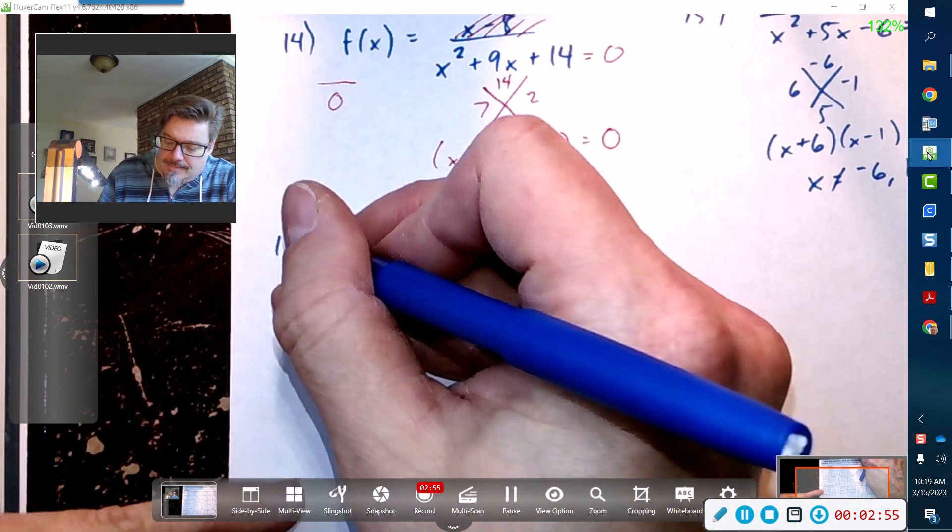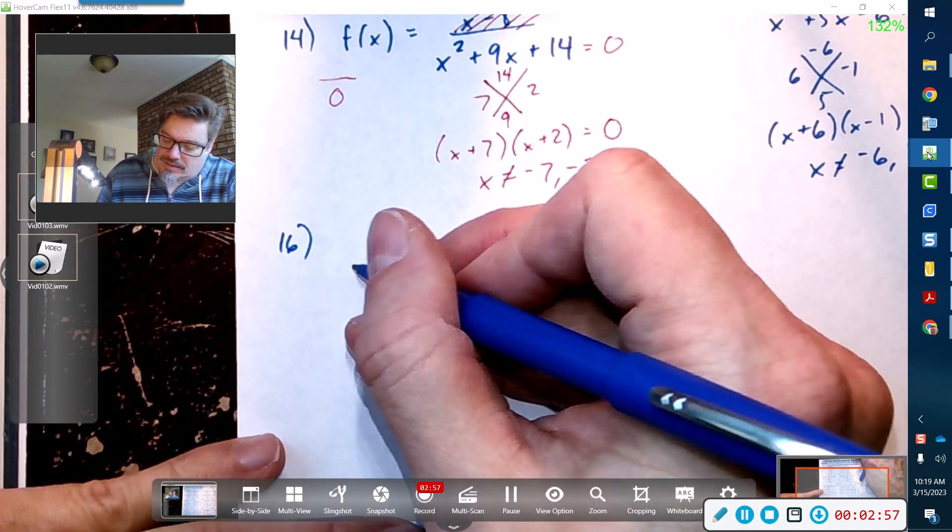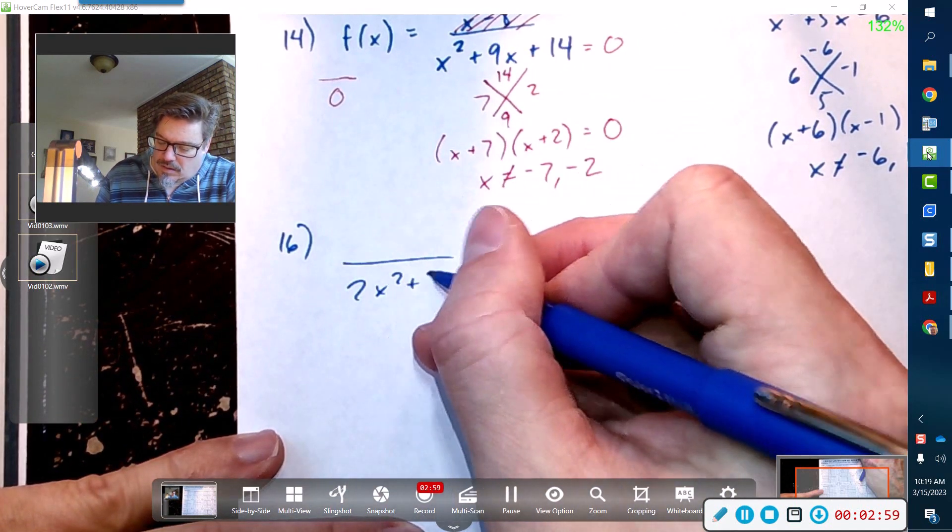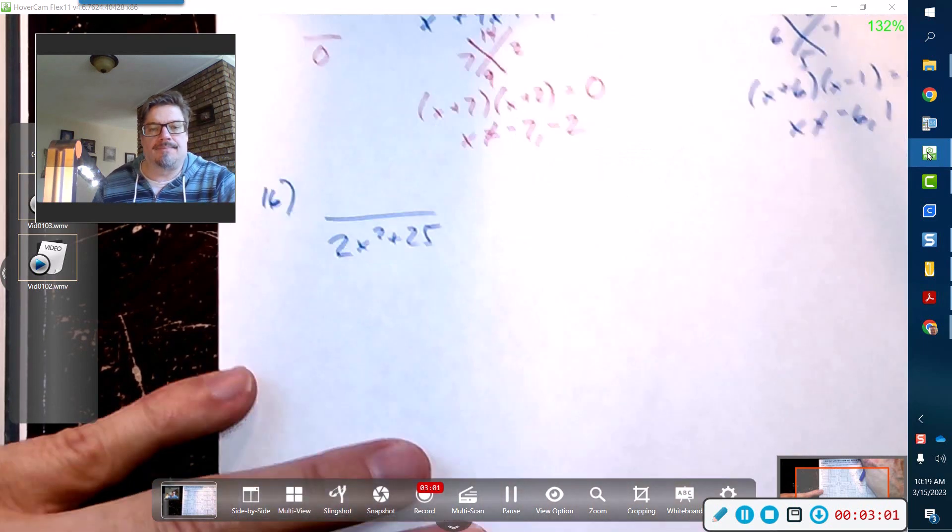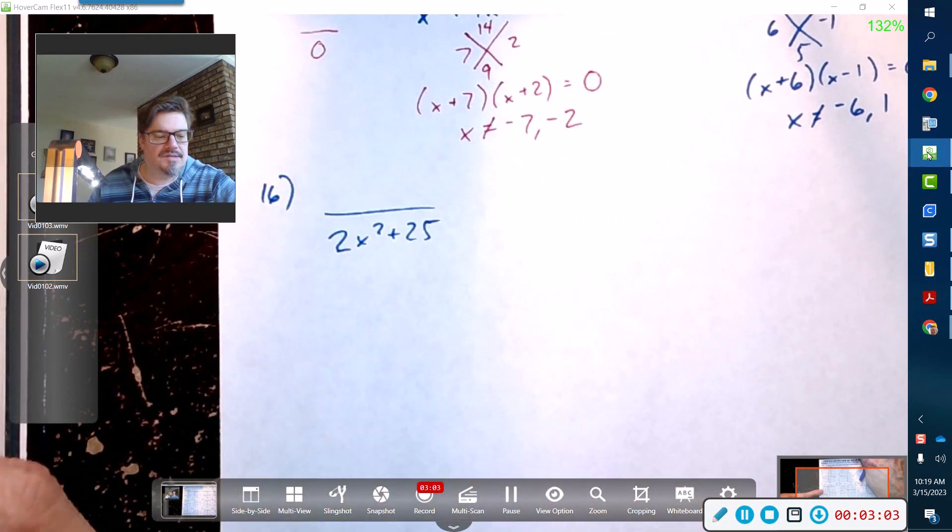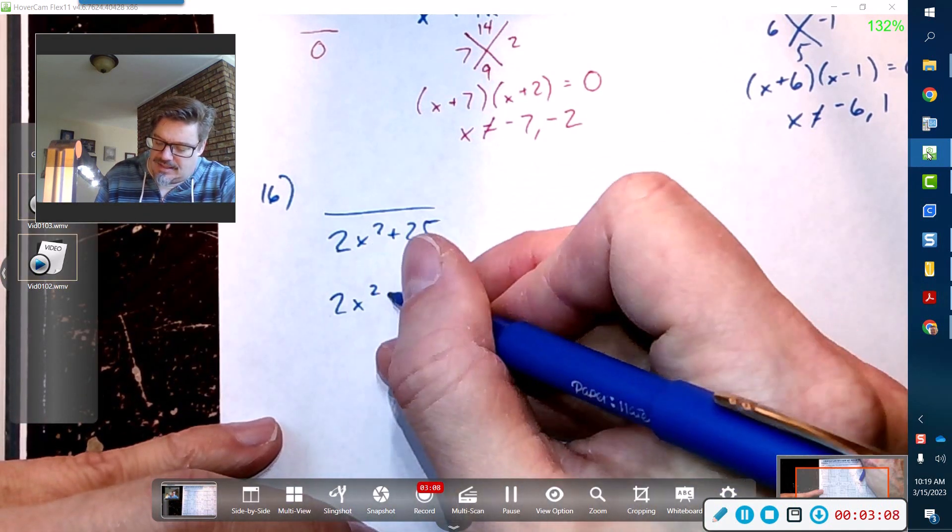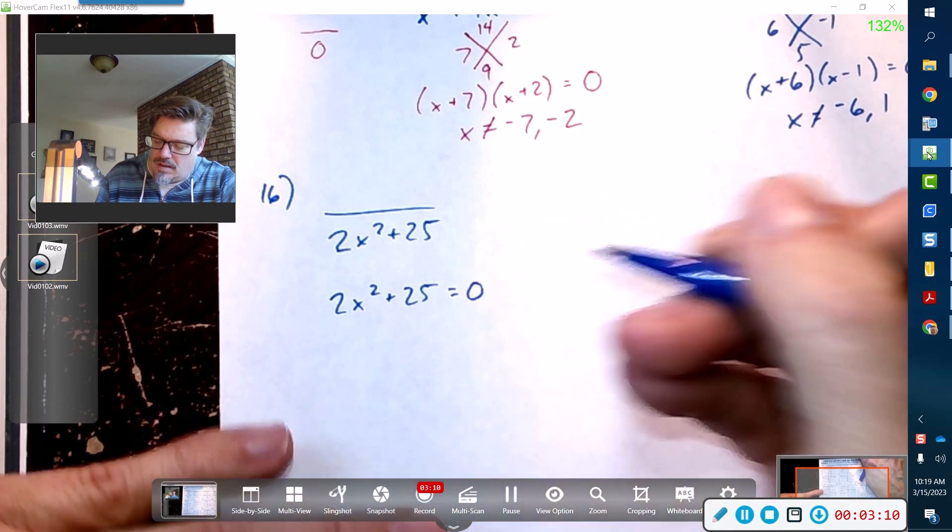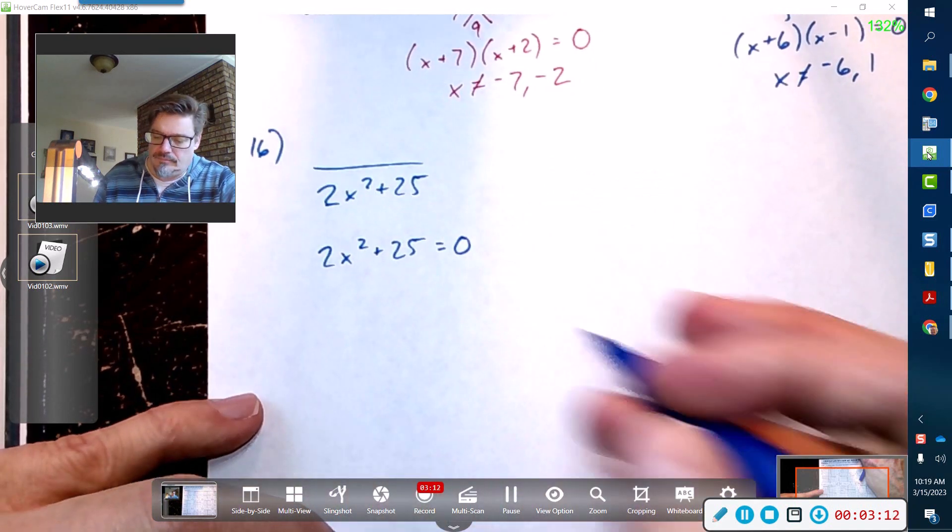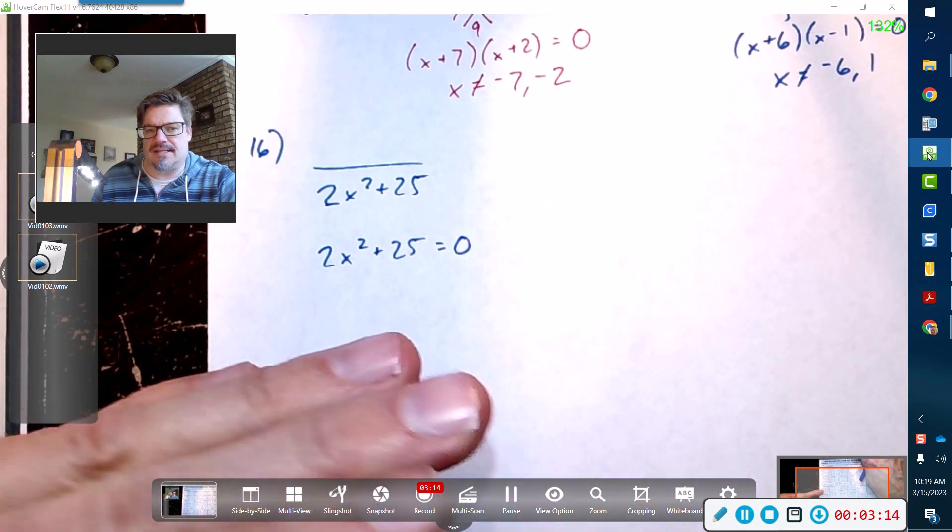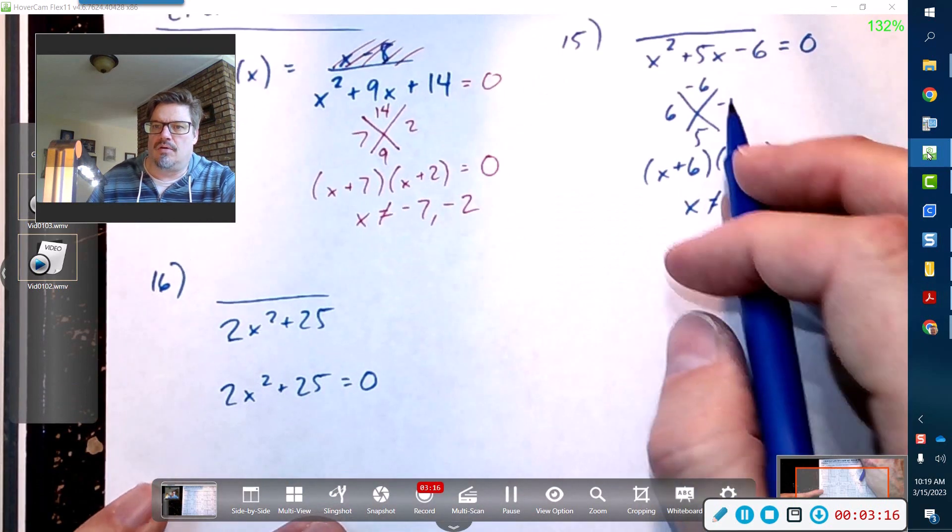Now here is interesting. Problem 16: 2x² + 25 equaling 0. Let's set that equal to 0. Now in this case, I only have one x over here—I had two of them both with different exponents. This guy just has one, so I can actually move that 25 over to the other side.